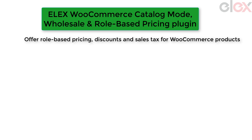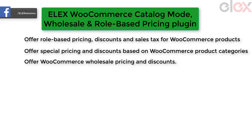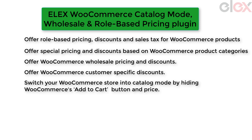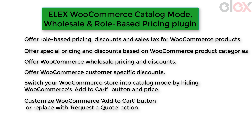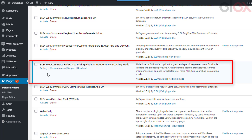Here are some of the features of the plugin: offer role-based pricing, discounts, and sales tax for WooCommerce products; offer special pricing and discounts based on WooCommerce product categories; offer WooCommerce wholesale pricing and discounts; offer WooCommerce customer-specific discounts; switch your WooCommerce store into catalog mode by hiding the add to cart button and price; customize the WooCommerce add to cart button or replace it with a request-a-quote action; and create and remove custom WordPress user roles.